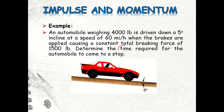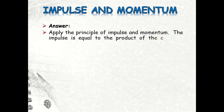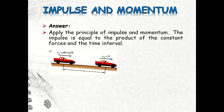Here is the solution. We apply the principle of impulse and momentum: impulse is equal to the product of the constant force and the time interval. Initially, v1 equals 60 miles per hour, and the final velocity v2 equals zero when the brake is applied. We need to convert the velocity into feet per second, because the problem uses pounds and feet as units.